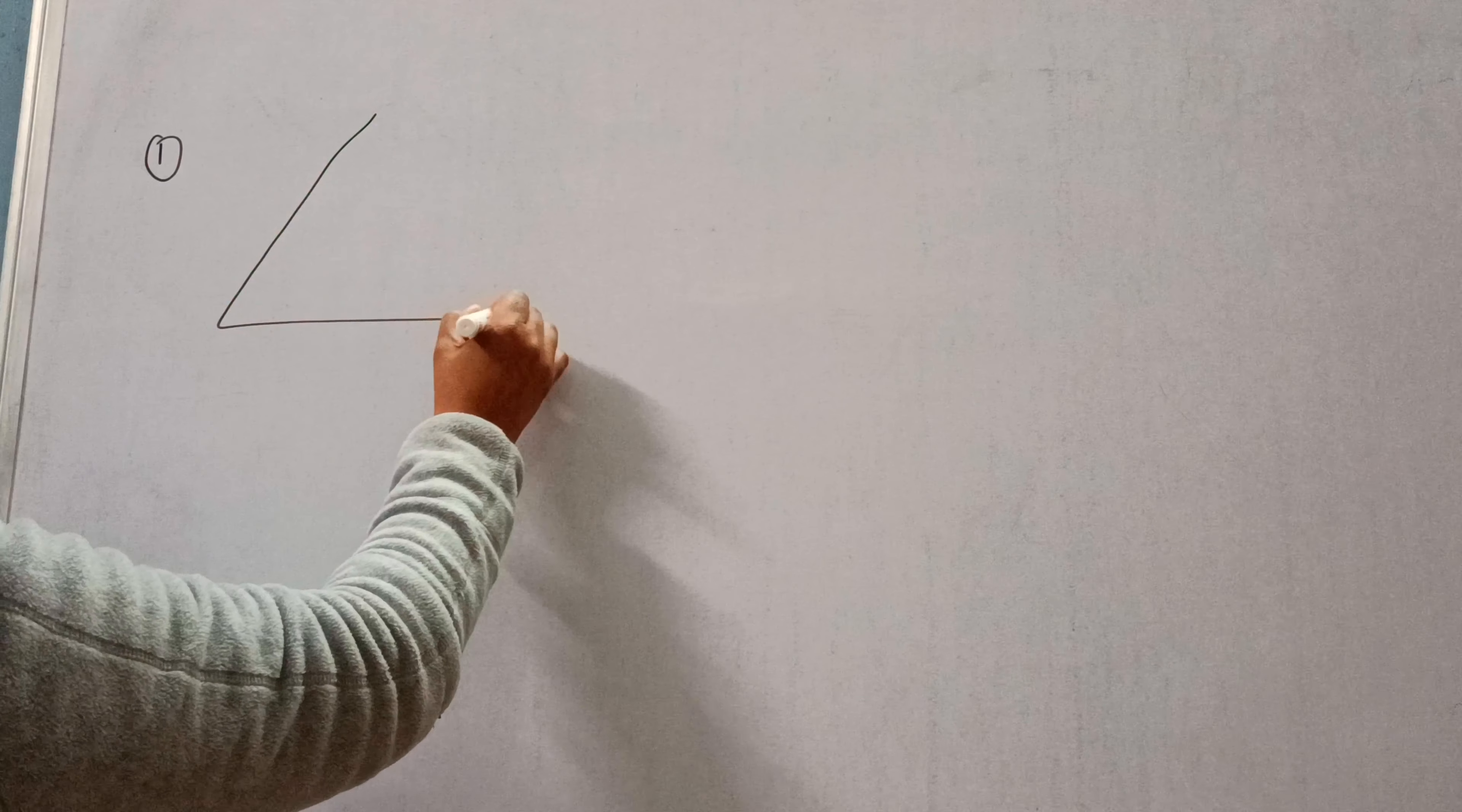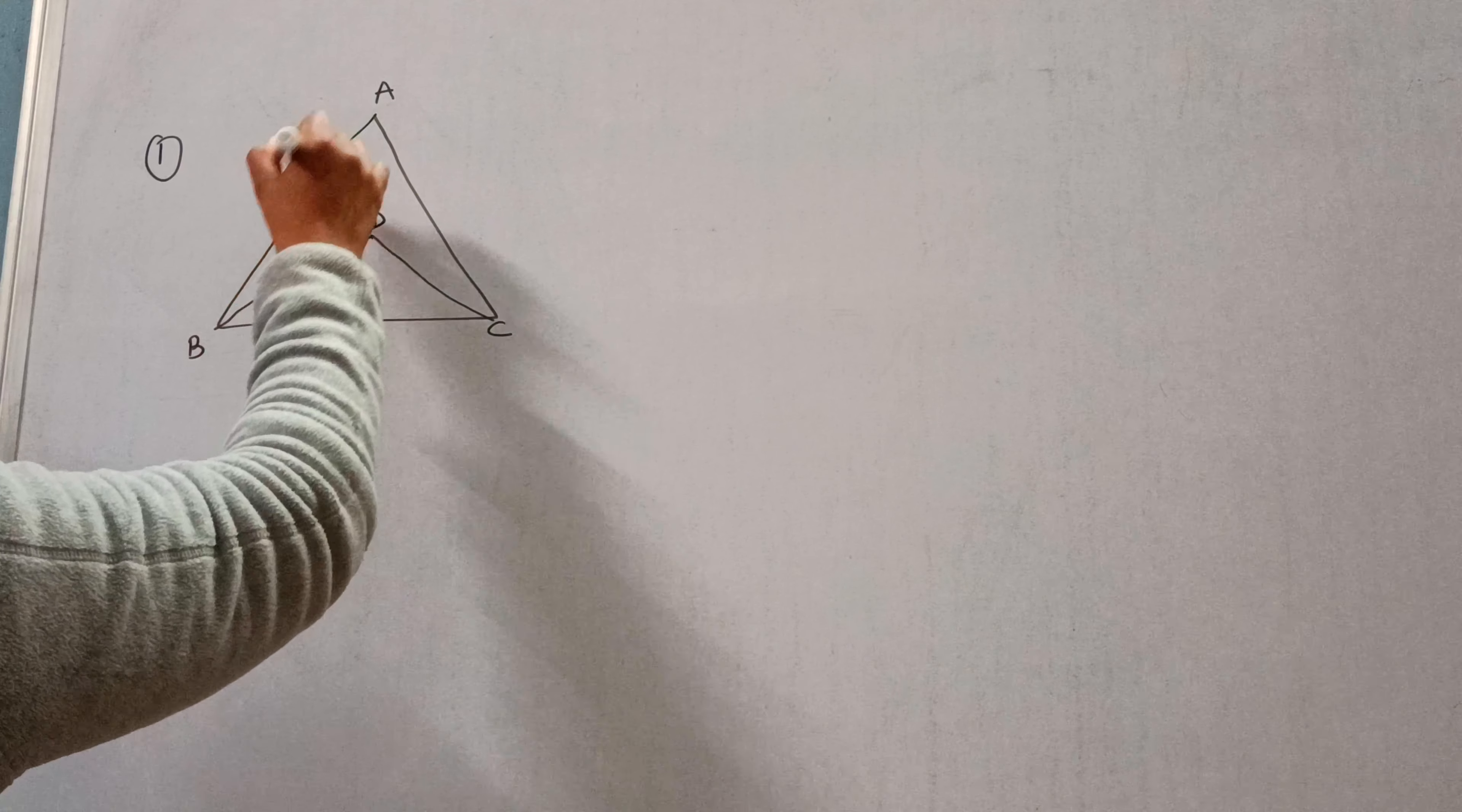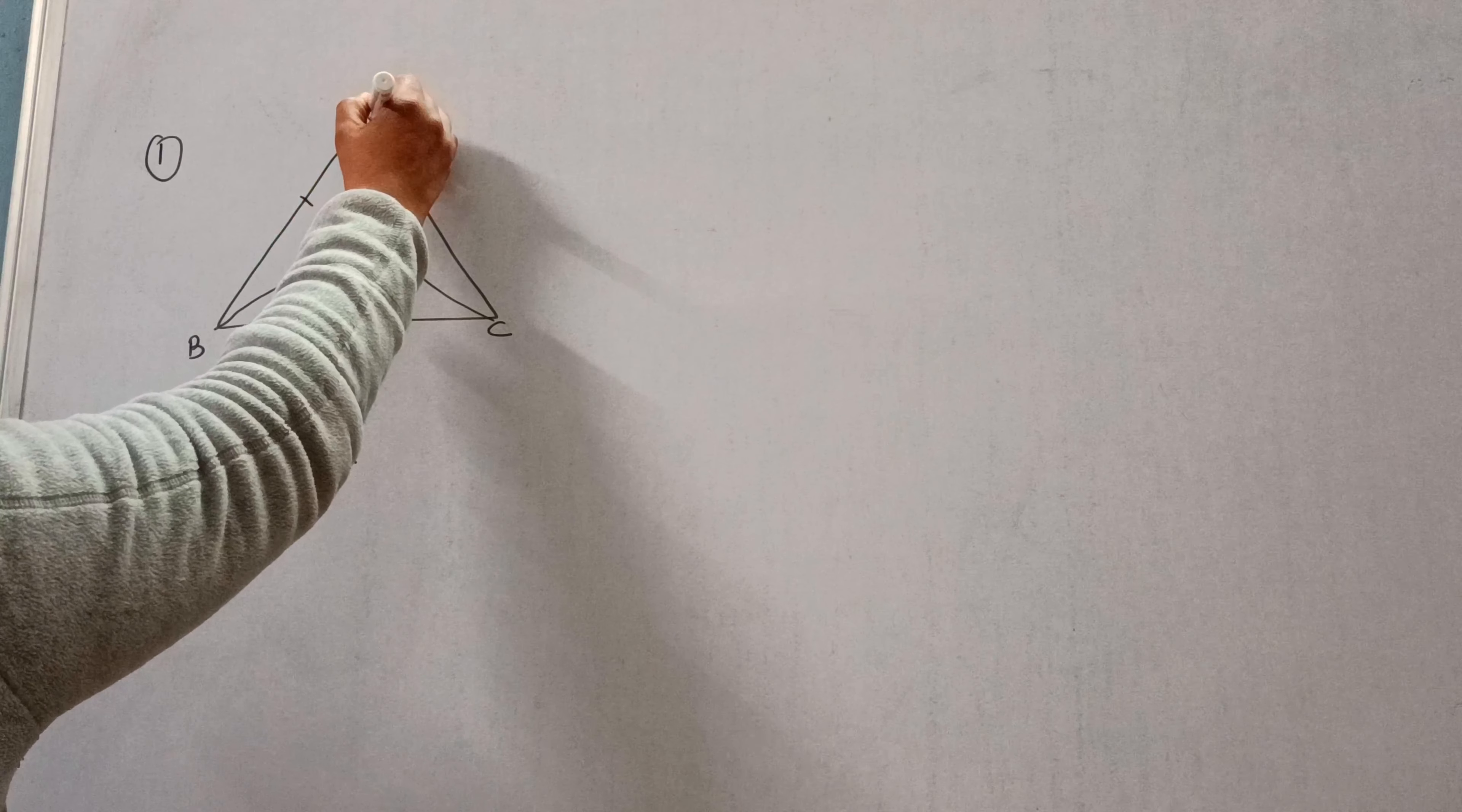In triangle ABC and triangle DBC, these two triangles are two isosceles triangles on the same base BC. That is, AB is equal to AC, BD is equal to DC, and vertices A and D are on the same side of BC. If AD is extended to intersect BC at P, we need to show the following.